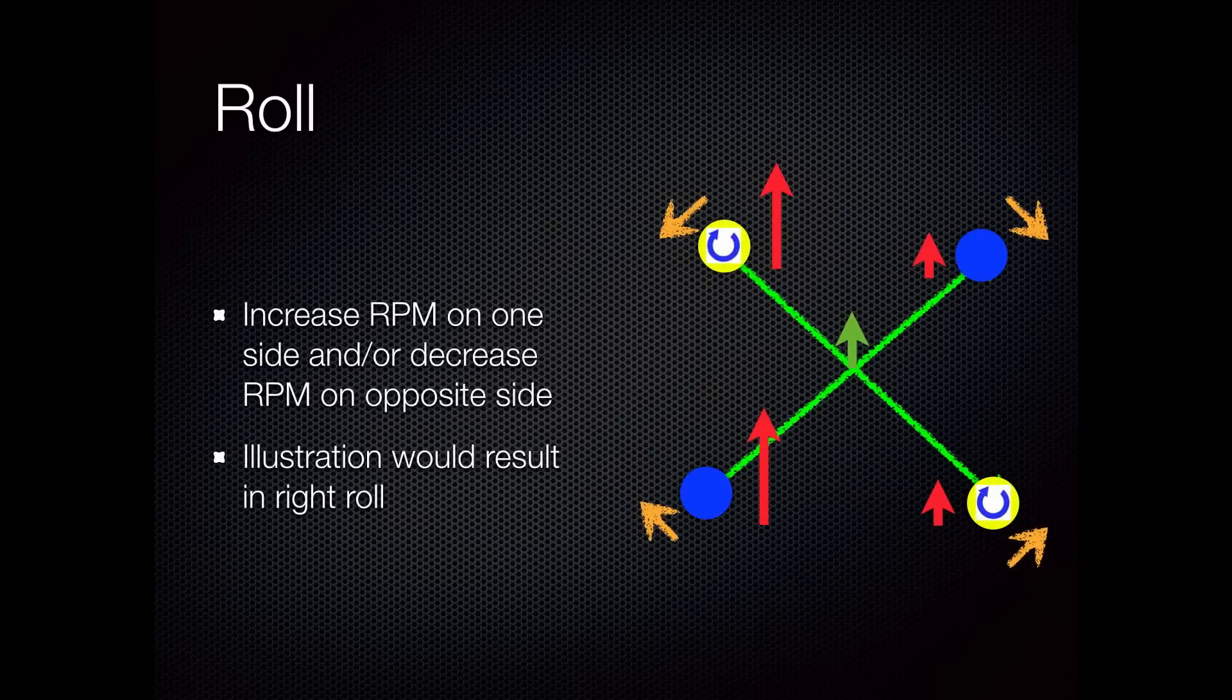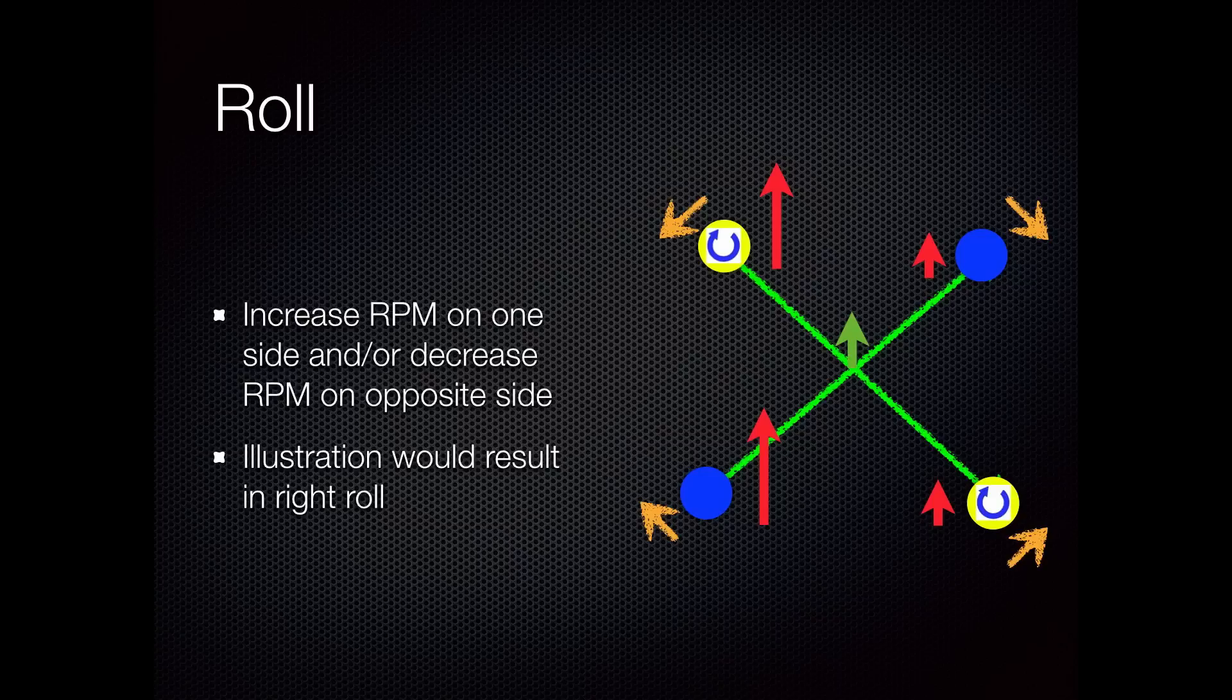The next basic control maneuver is roll. You increase the RPM on one side or the other, or decrease the RPM on the opposite side, which would cause the quad rotor to roll along its longitudinal axis. In this illustration, we've increased the RPM on the left two motors and slightly decreased it on the right two, which would cause the quad rotor to roll to the right.